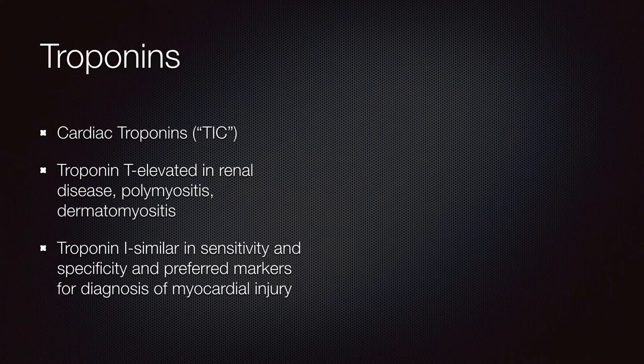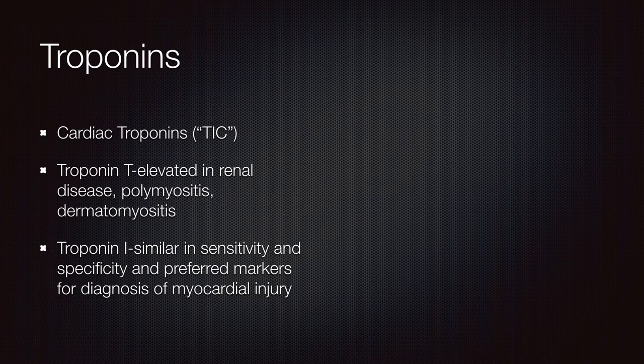Let's talk more about troponins. Cardiac troponin T is one marker, but it is also elevated in renal disease, polymyositis, and dermatomyositis. So you need a thorough history and physical examination. If the question mentions polymyositis or dermatomyositis, troponin T might not be the best test — it might be better to do troponin I. They are both similar in sensitivity and specificity and are preferred markers for diagnosis of myocardial injury.